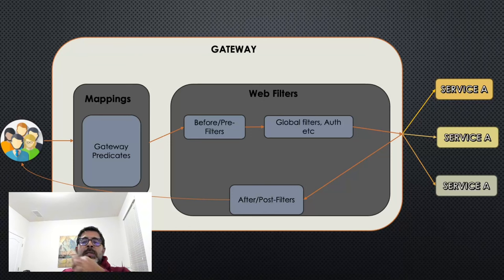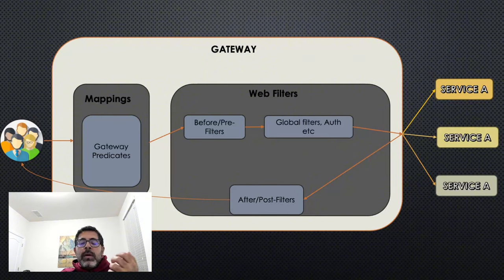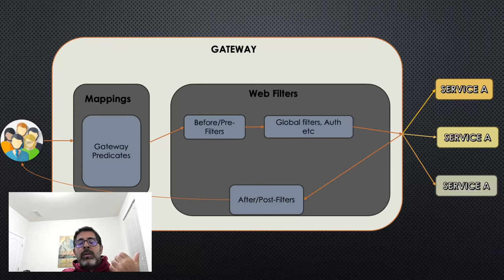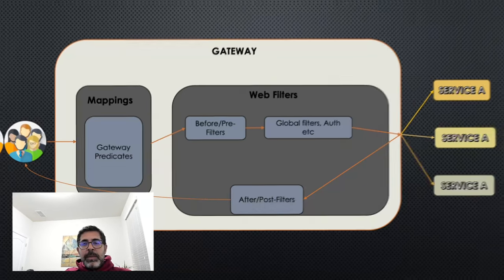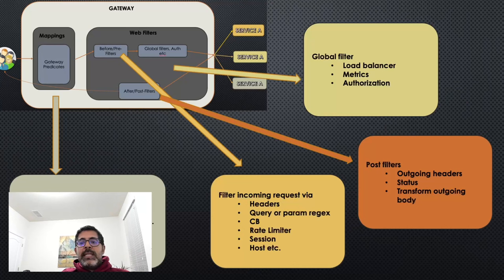Remember, the call went to the downstream service, and the downstream service sends the response back. Now you want to add some form of common headers — maybe for tracking and tracing ID — when sending back to clients. That is where the post filter comes into picture. So as you can see, each block plays a different function.